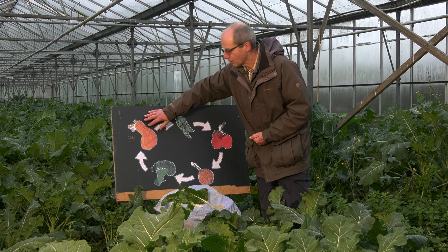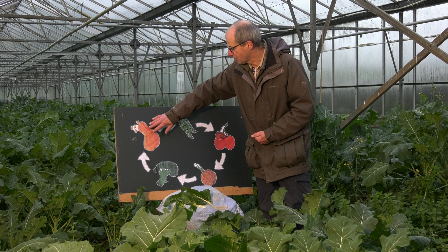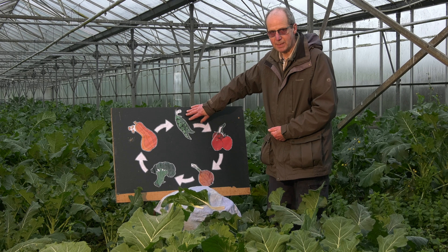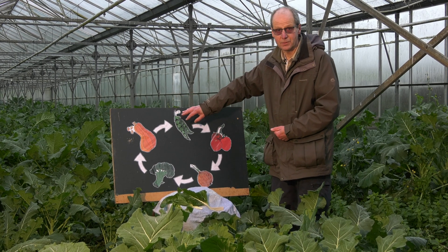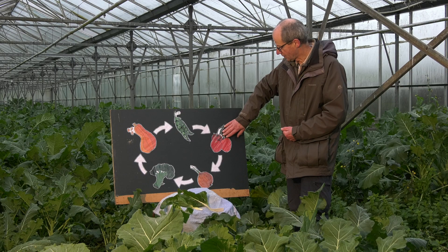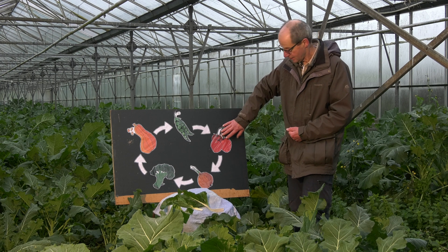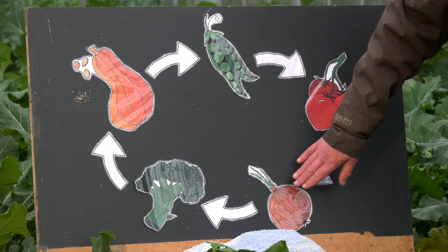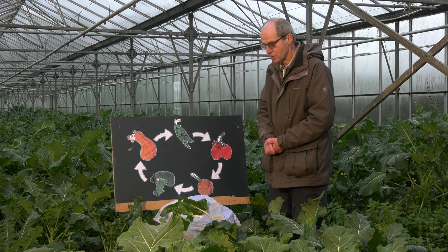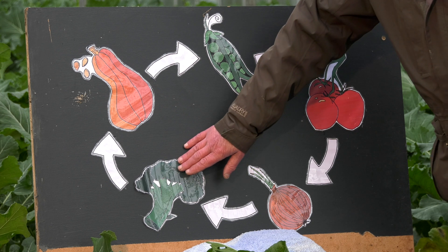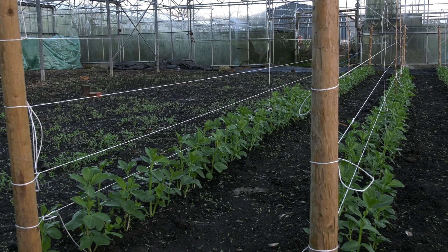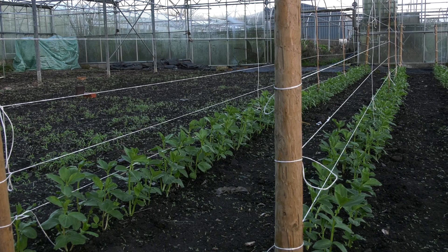If we start here, this is the courgette family: cucumbers, courgettes, squashes and pumpkins. Then we've got the legumes — peas and beans, and if you like clovers, it's all the nitrogen-fixing crops. Then the nightshade family, which includes tomatoes, peppers and aubergines — it's a massive family. Then the onions, the alliums: onions, garlic, shallots and leeks. And then the brassicas — another massive family: cabbages, broccolis, kales and all sorts.